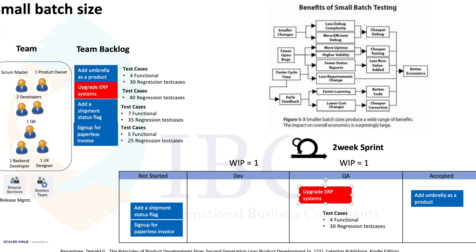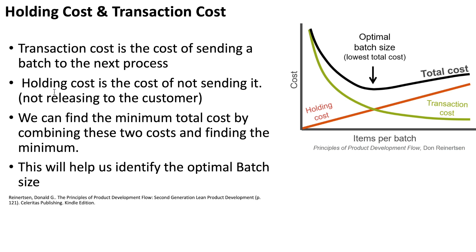We all understand that smaller batch sizes are ideal, but the compromise is explained through the concepts of holding cost and transaction cost. The transaction cost is the cost of sending a batch to the next process, and the holding cost is the cost of not sending it.